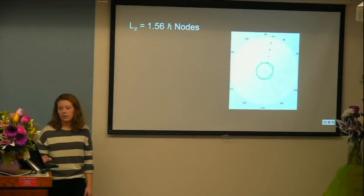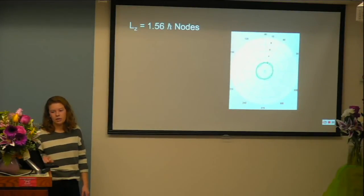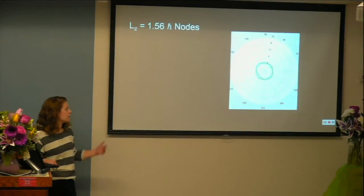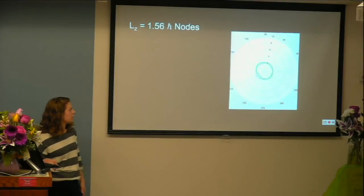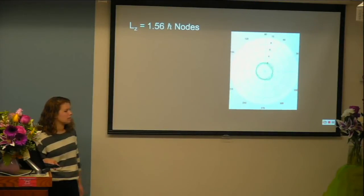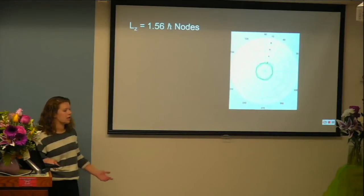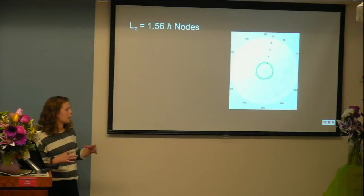Here's the first node. Running it with 1.56 nodes, you can see the very quick movement of both the red, green, and the blue combination line. When there's not an even integer number of nodes, the electron is a lot less stable and it's going to try to get back to a more stable state.